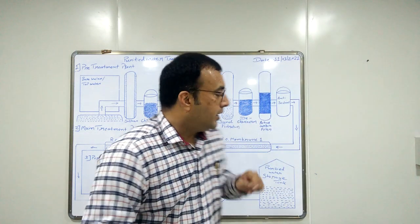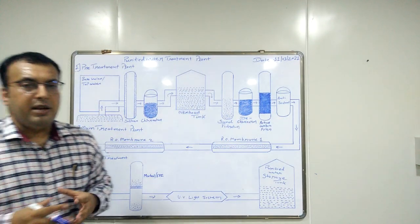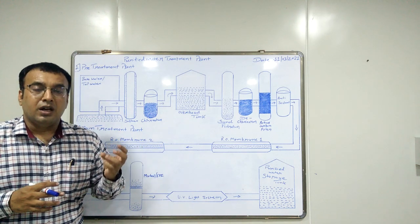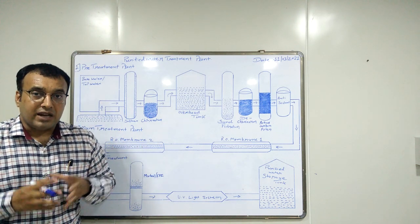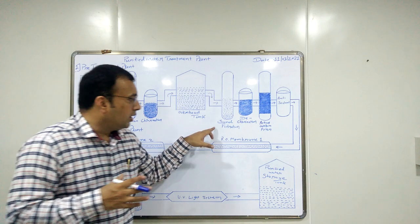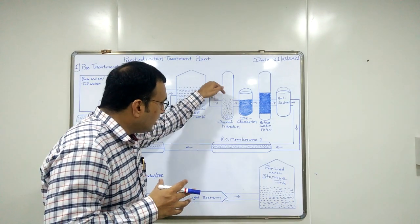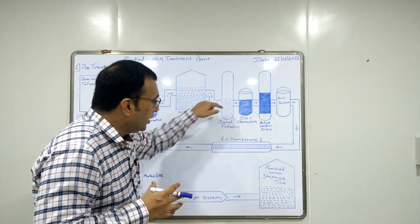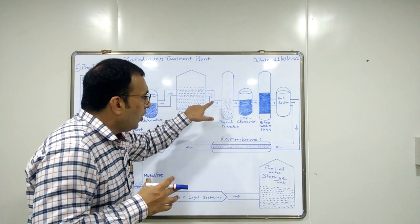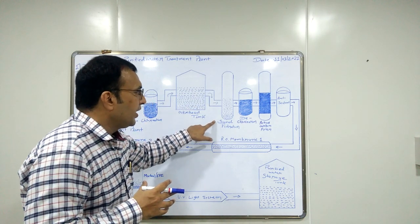Next is sand filtration. Visible particles like sand, silt, rust, heavy metals, and many more are present in this water. Some of them are floating on the surface of the water and some are sinkable. So sand filtration removes all these contaminants from the water.